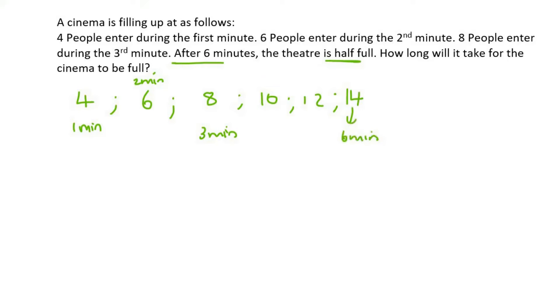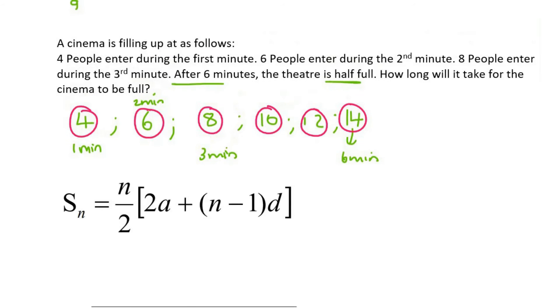All right, so check this out. How many people are there? Well, 14 people entered, but how many people have entered in total? You could add these numbers together, or you could use the sum formula. I'm just going to be fancy and use the sum formula. We know that there are six terms, so we can find the sum of those first six, which is actually six minutes.